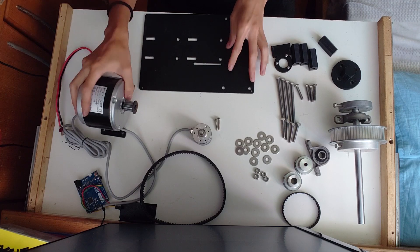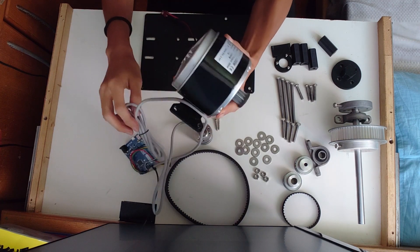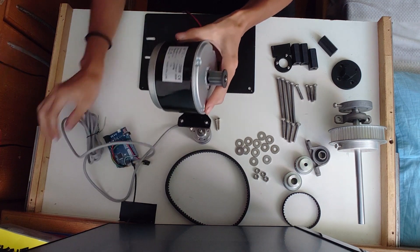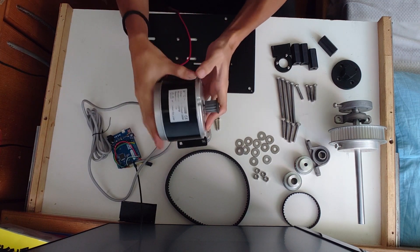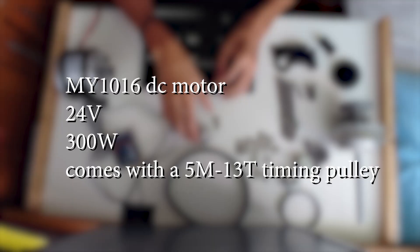The second is the DC motor. I use a 24V 300W DC motor, model number MY1016. It comes with a 5M 13T timing pulley on the shaft.